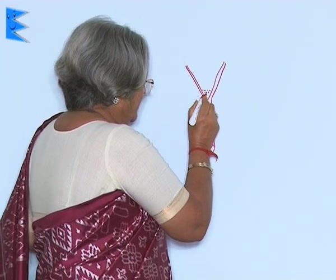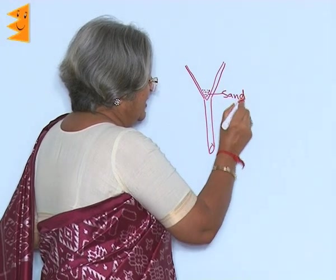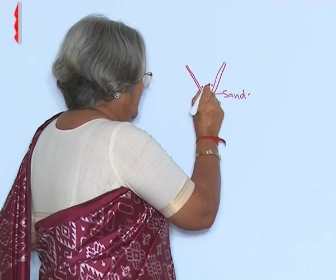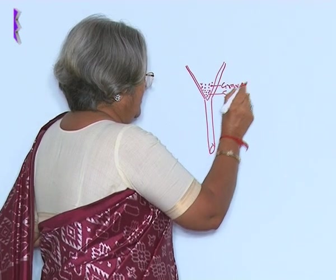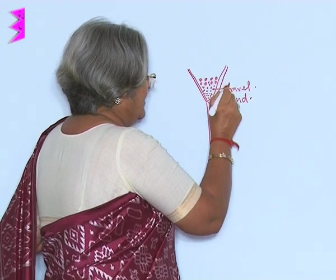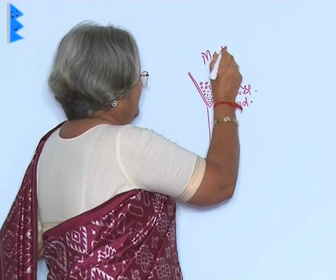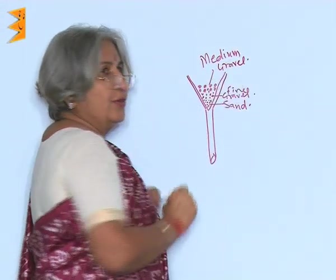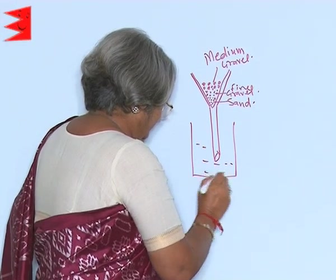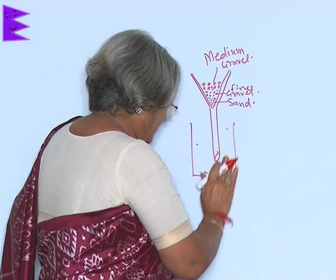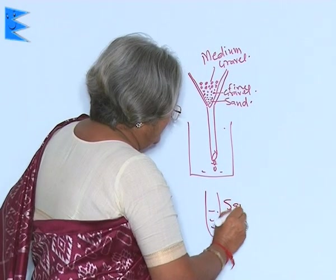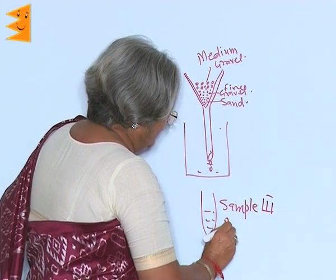Now add a little of sand — very fine sand at the bottom. The first layer is of very fine sand, then fine gravel, and then medium sized gravel. Now you pour your aerated water through this and collect it in another beaker. Once the water has been collected, take it in a test tube and label it 'Sample 3: after filtration.'